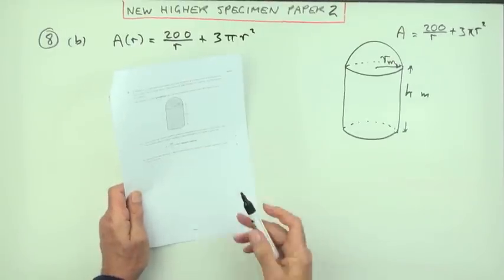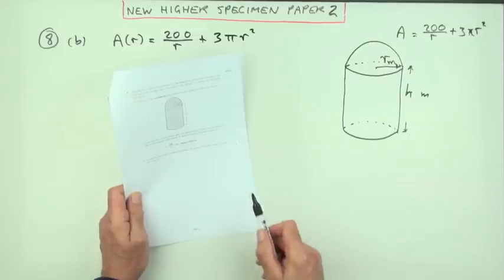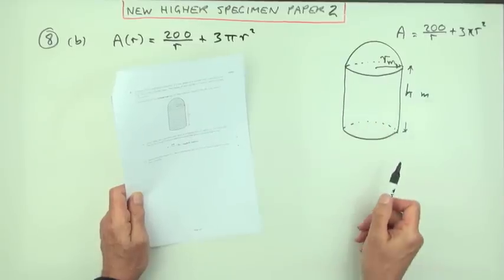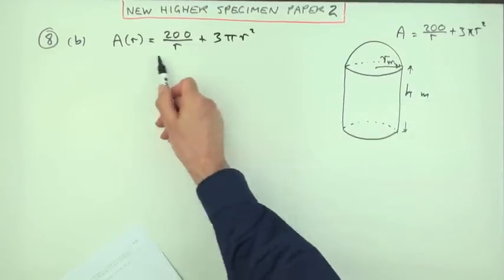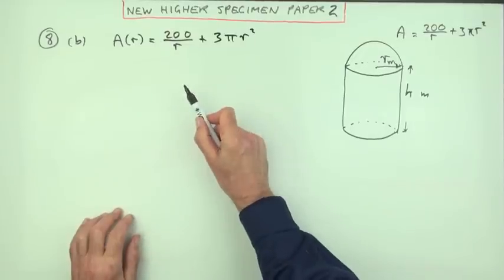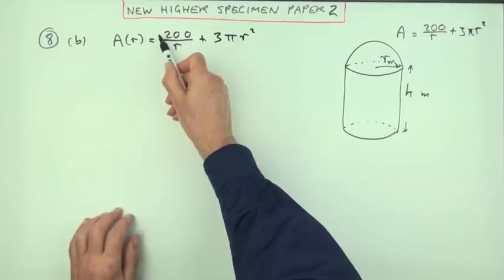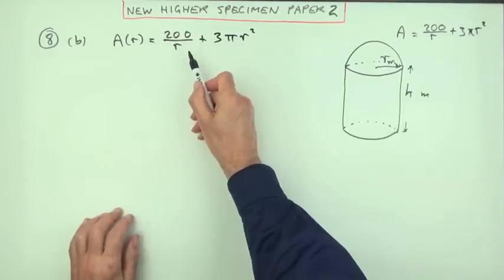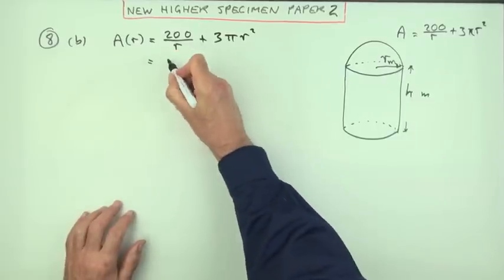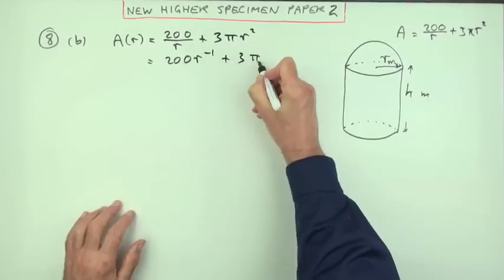Now for part B: determine the value of R which minimizes the amount of metal needed to build the container. That means which minimizes the surface area. Well, differentiate it. I'll set it all out: 200 R to the negative 1 plus 3 pi R squared.